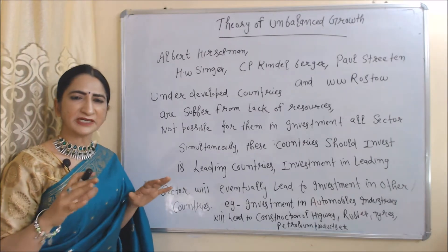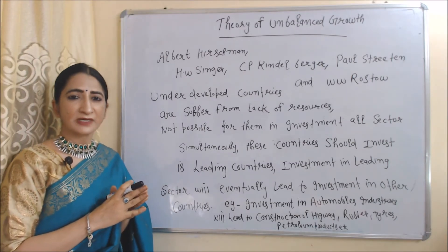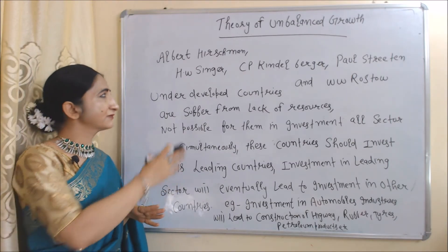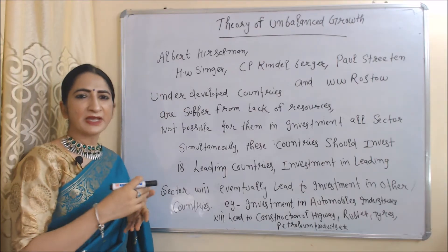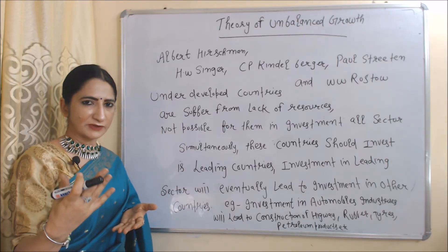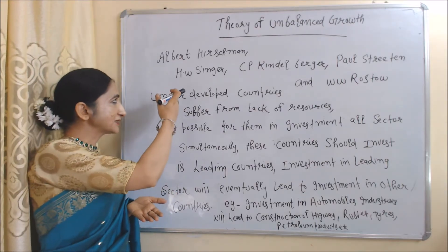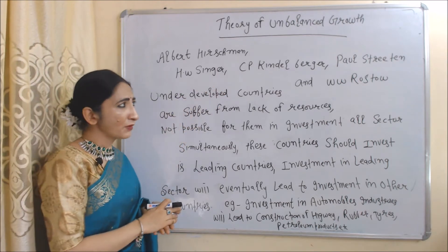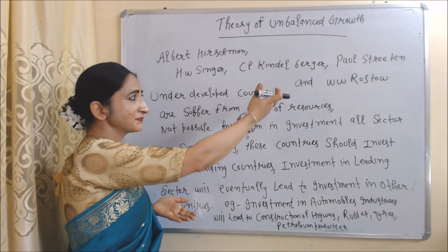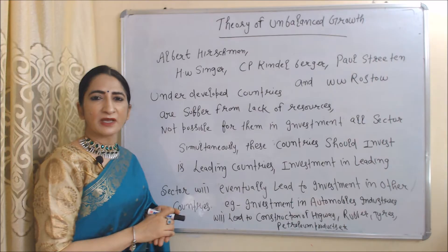Now we will see the theory of unbalanced growth. This theory is given by Albert Hirschman, and other supporters of this theory are H.W. Singer, C.P. Kindleberger, Paul Streeten, and W.W. Rostow.